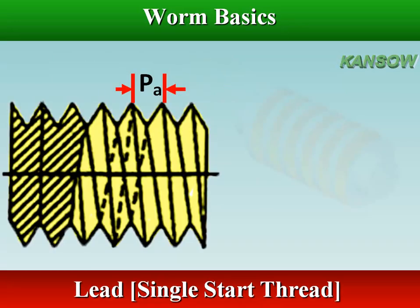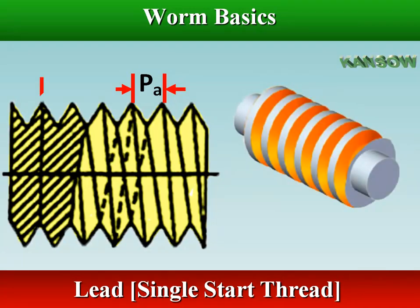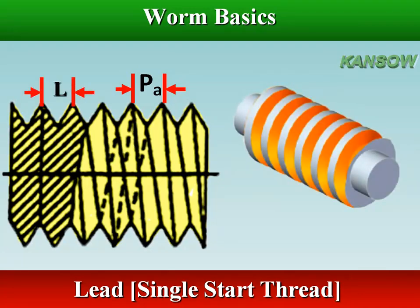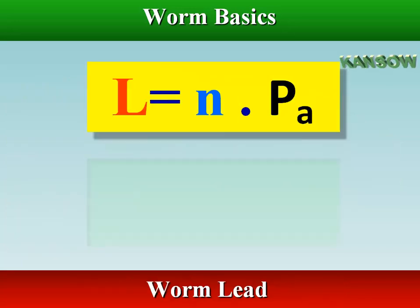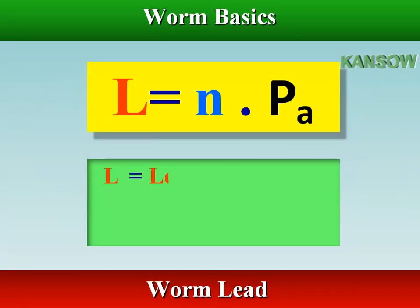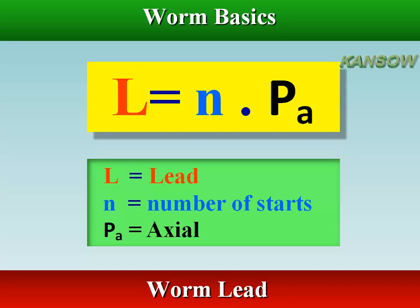For single start threads, lead is equal to the axial pitch. But for multiple start threads, lead is equal to the product of axial pitch and the number of starts.